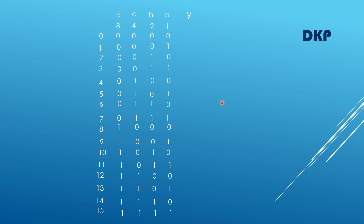The next step is to write the output. The condition given in the question is: the inputs DCBA produce an output 1 only when two adjacent input variables are 1. One more important point is that D and A are considered as adjacent variables.